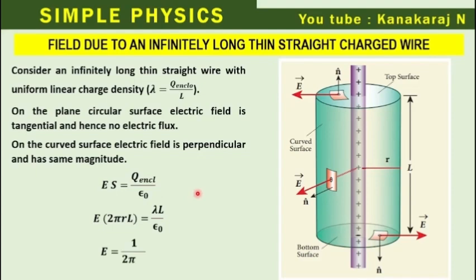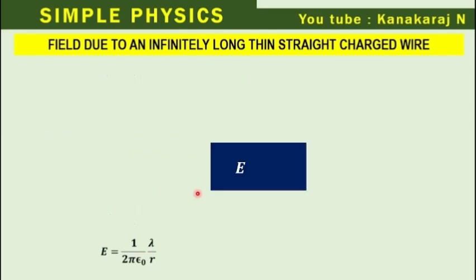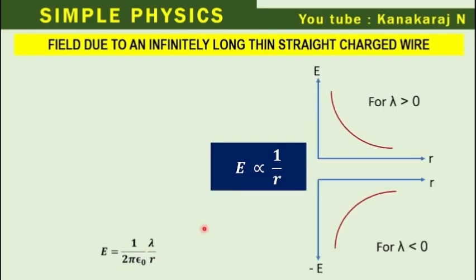We get electric field E equals 1 over 2 pi epsilon 0 times lambda divided by R. So the electric field is inversely proportional to the distance. It can be represented in a graph — for positive charge, the electric field decreases with distance.